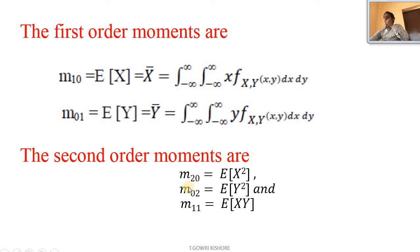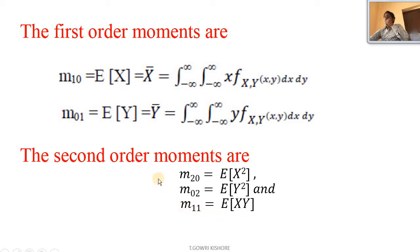The second order moments are: n equal to 2 and k equal to 0, giving expectation of x squared; n equal to 0 and k equal to 2, giving expectation of y squared; and m₁₁ equal to expectation of x into y. Here the sum n plus k equals 2, so these are second order moments.